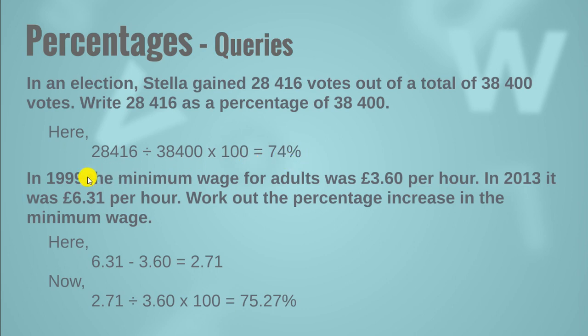The answer will be 74%. In 1999, the minimum wage for adults was 3.6 pounds per hour. In 2013, it was 6.31 pounds per hour. Work out the percentage increase in the minimum wage. First, you need to find the increase that occurred. So for that you need to subtract 3.60 from 6.31 and you get 2.71. So 2.71 is the increase in the wages. The difference will be divided by the initial value, initial amount, and then multiplied by 100. You can get that 75.27% was the increase in the minimum wage.